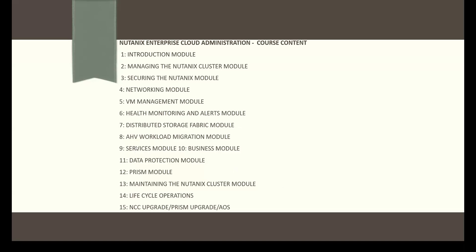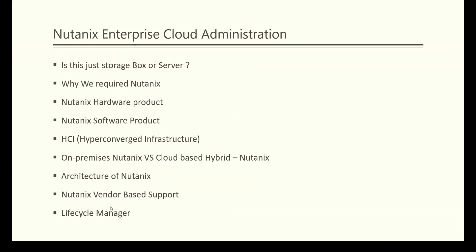We'll cover the service model and business model — how many Nutanix models are available. Data protection — how you can protect your data, backup policies, schedulers. And Prism — there are two kinds: Prism Central and Prism Element. Prism Central is used to manage multiple clusters.